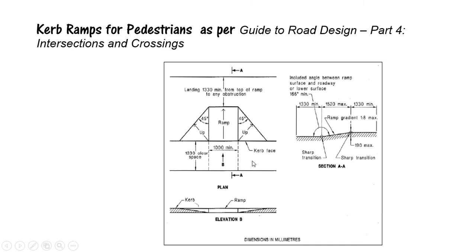As per the road design guideline, it is similar, however it provides a minimum dimension. The distance from the edge of the obstruction — the space required at the end of the ramp — is 1330mm minimum. As you can see, the 45-degree splay is shown here; from that point it goes up 45 degrees on both sides. This is the cross-section, and all dimensions are provided.